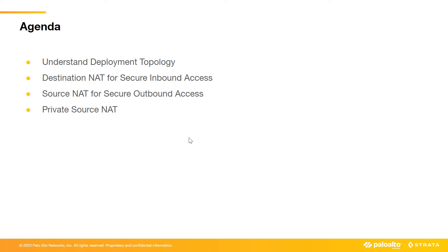Here is the short agenda for this demonstration. We will start with understanding the deployment topology, discuss how destination NAT will be utilized to provide secure inbound access through Cloud NGFW, and how source NAT will be utilized to provide secure outbound access. We will also talk about private source NAT capability and the use cases for this functionality.